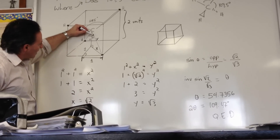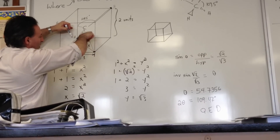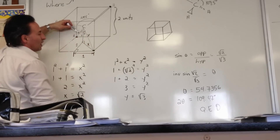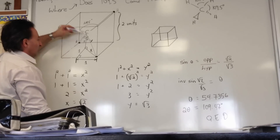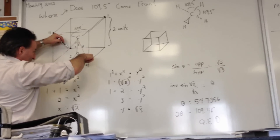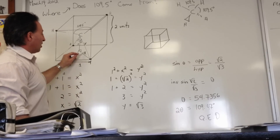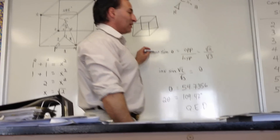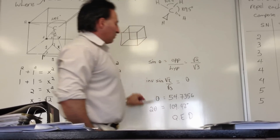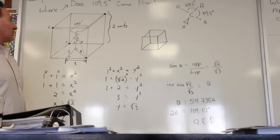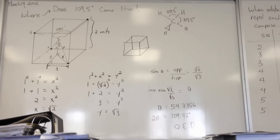That allows us to find this angle, which is basically half the angle between the two hydrogen atoms — we're trying to find twice theta. The angle theta is on both sides of the cube, and the two angles theta added together equal the full bond angle between two hydrogen atoms. Using sine theta equals opposite over hypotenuse — root two over root three — we find theta equals 54.73 degrees. But that's half the angle, so by doubling theta we find the total angle, which is 109.47 degrees. And that's where we get 109.5.